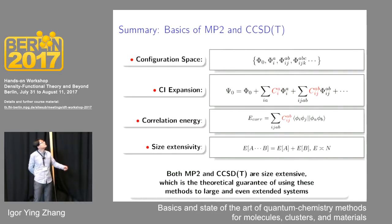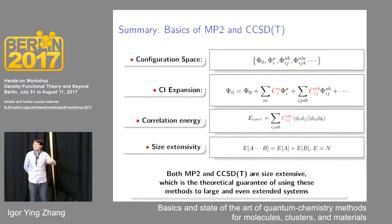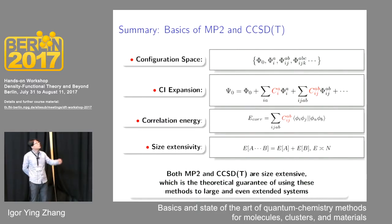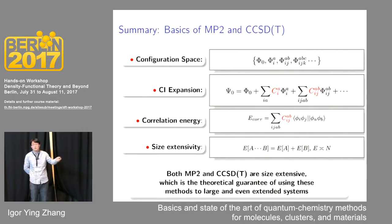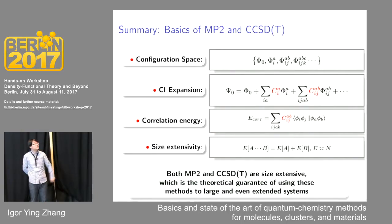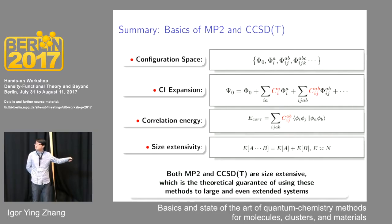To summarize this section: I introduced MP2 and CCSD(T) from a native quantum chemistry viewpoint, particularly through the configuration space and CI-type expansion. Due to the intermediate normalization constraint, the correlation energy depends only on double excitation configurations. Size extensivity is a very important property in quantum chemistry method development, and both MP2 and CCSD(T) are size-extensive — this is the theoretical guarantee for applying these methods to large and even extended systems.